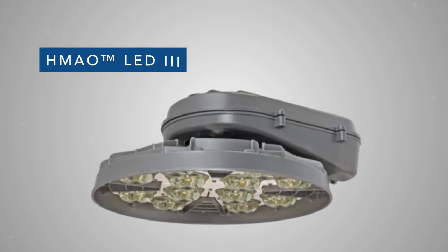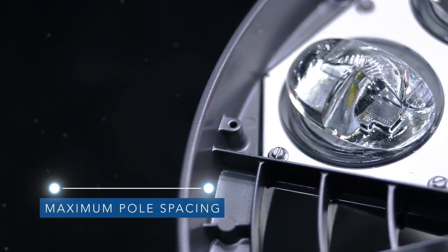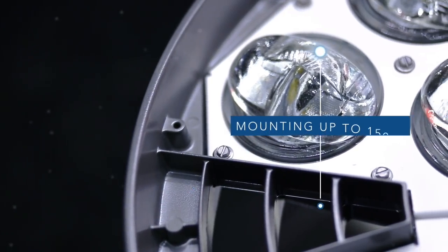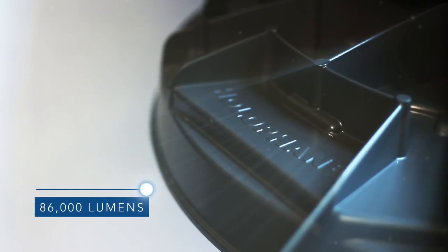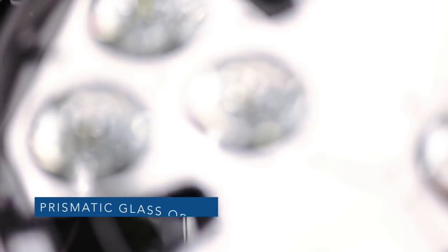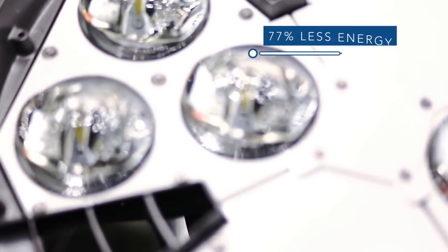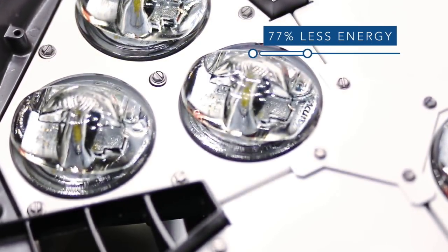HMAO LED3 is the ultimate high mast solution for roadways and large area applications which require maximum pole spacing and mounting heights up to 150 feet. With light output up to 86,000 lumens, the durable HMAO LED3 utilizes a modular LED engine with prismatic glass optics for a wide range of distribution needs while reducing energy consumption by up to 77% compared to HID fixtures.